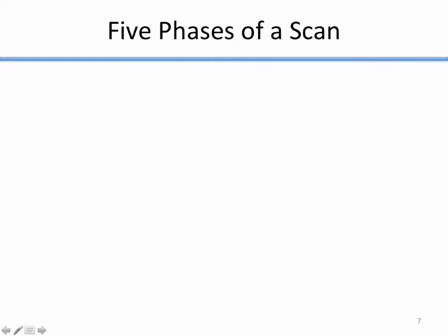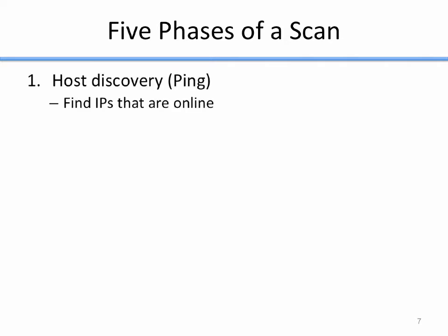When you run NMAP, there are five phases of a scan. The first phase is called host discovery. During host discovery, NMAP figures out what computers are online within a given set of IP addresses you've specified — determining which computers out of a specified IP range are actually online. This is sometimes called the ping phase, but usually host discovery.